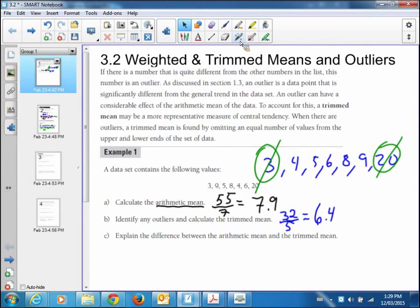Explain the difference between the arithmetic and trimmed mean. Well, the arithmetic mean is pretty high, 7.9. You look where 7.9 is on this scale here. It's pretty high up there, actually. That 20 really pulled things up high. If you look at the 6.4, it's a little lower. It more or less is in the middle of the data set. I'd say the trimmed mean in this case is definitely more accurate.